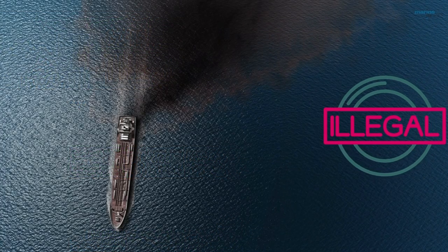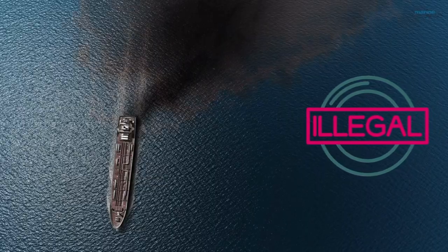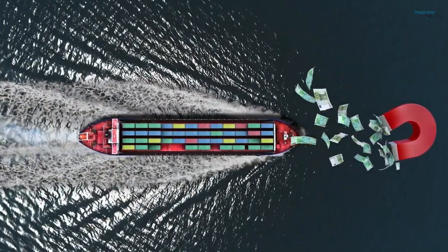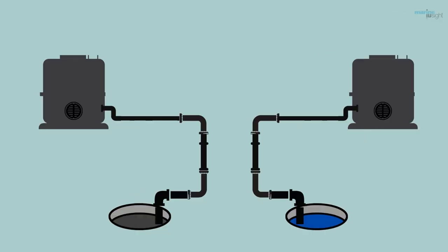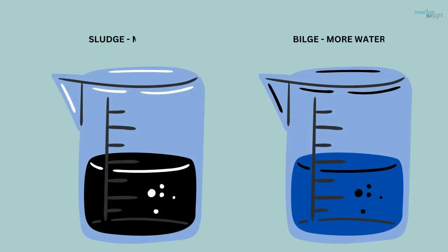Ships do not throw or pump the oil overboard. It is unlawful and could lead to hefty fines and imprisonment of the crew. Instead, the waste oil is segregated in sludge and bilge and ships have dedicated sludge and bilge tanks. Bilge and sludge are a mixture of oil and water. The only difference being that bilge has less quantity of oil while sludge has more oil in it.